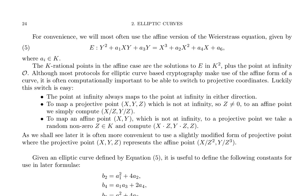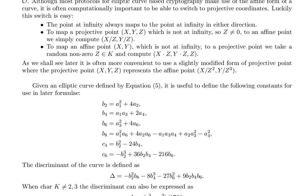The point at infinity always maps to the point at infinity in either direction. To map a projected point (X, Y, Z) which is not at infinity, so Z is not 0, to an affine point, we simply compute (X/Z, Y/Z). To map an affine point (X, Y) which is not at infinity to a projected point, we take a random non-zero Z in K and compute (X·Z, Y·Z, Z). As we shall see later, it is often more convenient to use a slightly modified form of projective point where the projective point (x, y, z) represents the affine point (x/z^2, y/z^3).